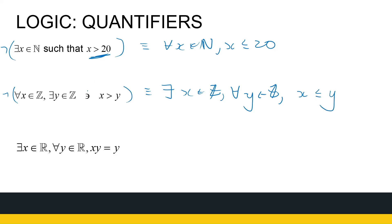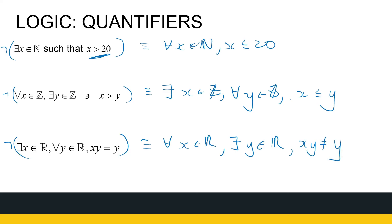We've already shown the original statement was true, and it makes sense that this negation is false — because what it says is I can find the smallest integer, and that's not possible. The last negation: the original statement was 'there exists a real number x such that x times y equals y for all y' — our real number was 1. The negation is 'for all real numbers x, there exists a real number y such that x times y is not equal to y.' My original statement was true, so can you show this negation to be false?